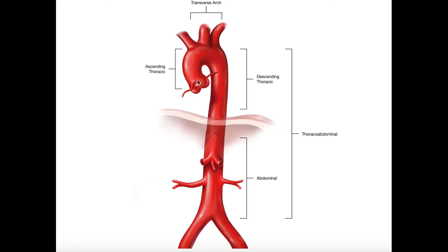Here's the aorta, with the ascending part coming off of the left ventricle, arching around, with three branches coming off of the aortic arch. Once it starts descending all the way down until it touches the superior surface of the diaphragm, we call all of that the thoracic aorta. The branches that came off of that were serving structures in the thoracic cavity, such as the heart and the lungs.